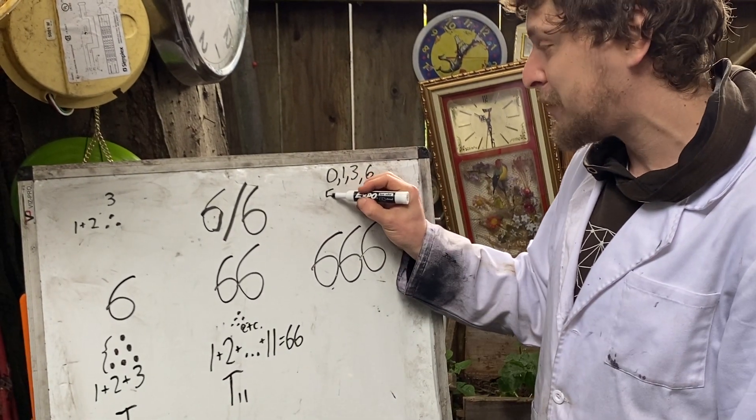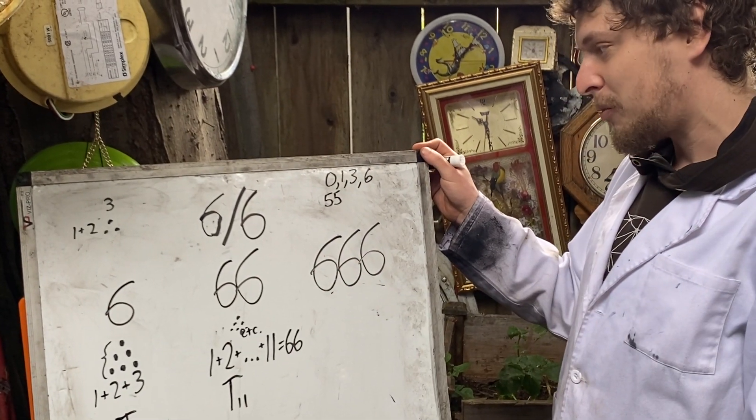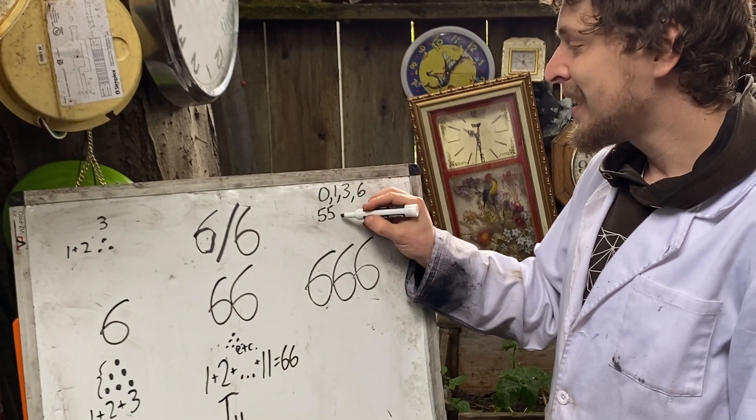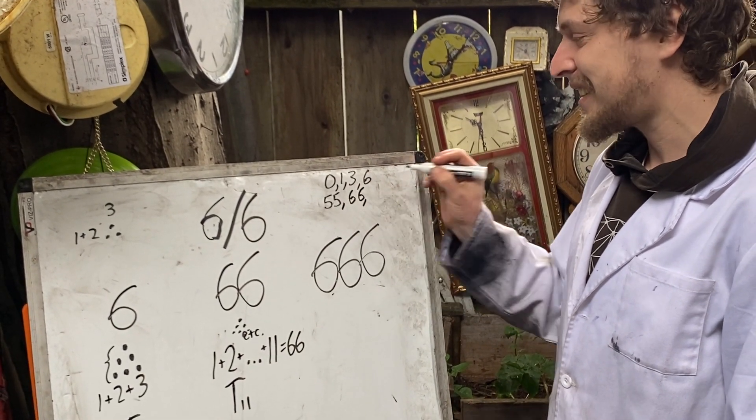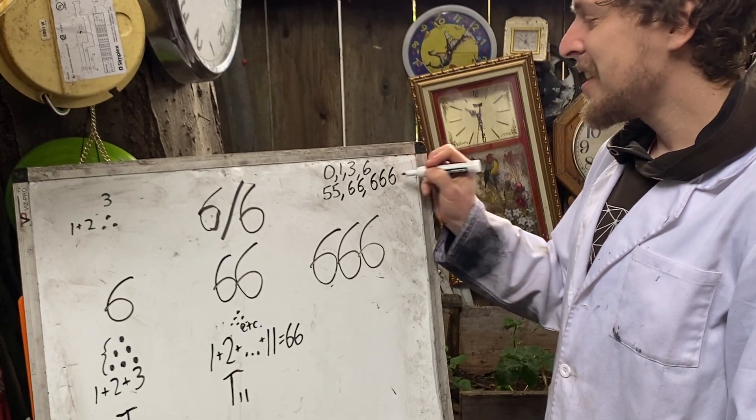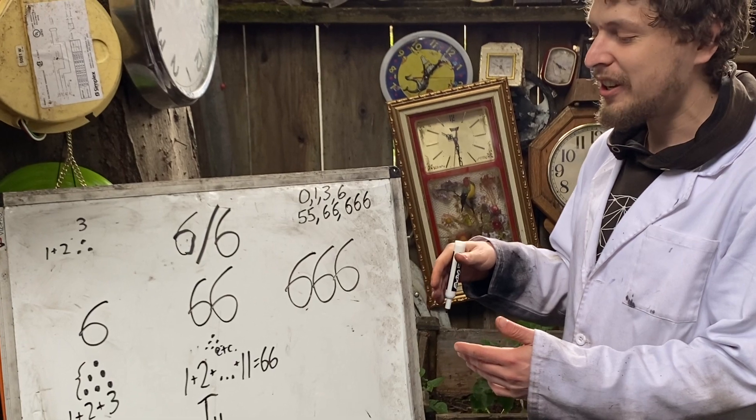And if you're going to the multi-digit ones, the others are 55, which is the triangular number before this one, the 10th triangular number, 66 right there, and 666. The largest triangular rep digit in base 10.